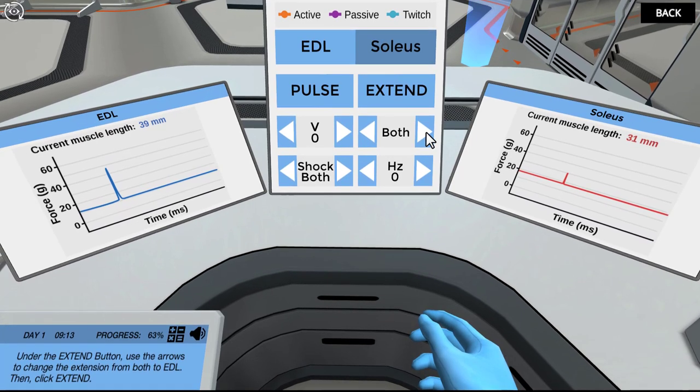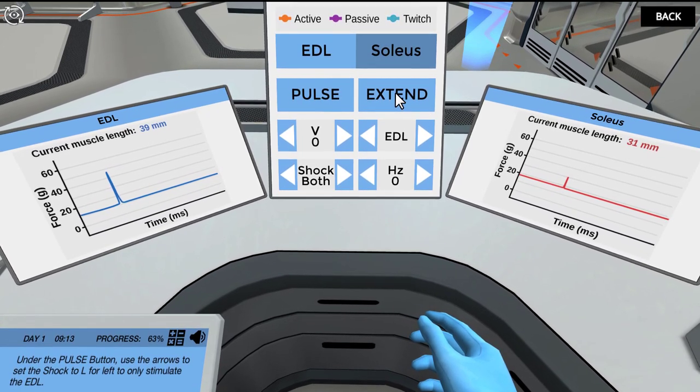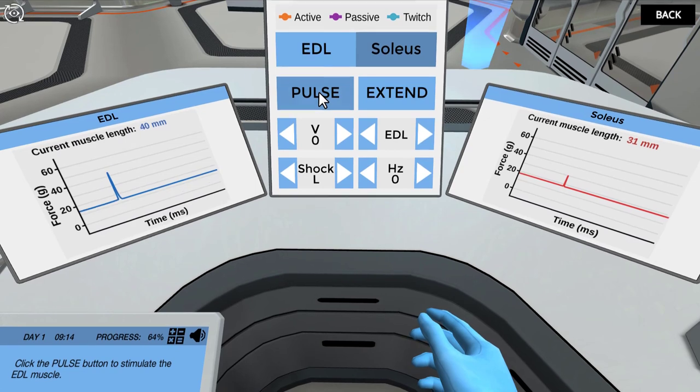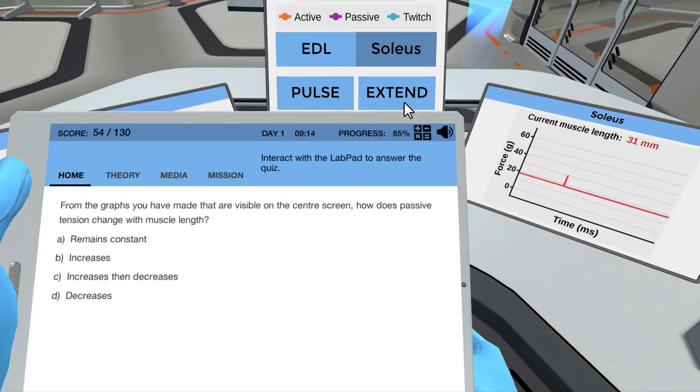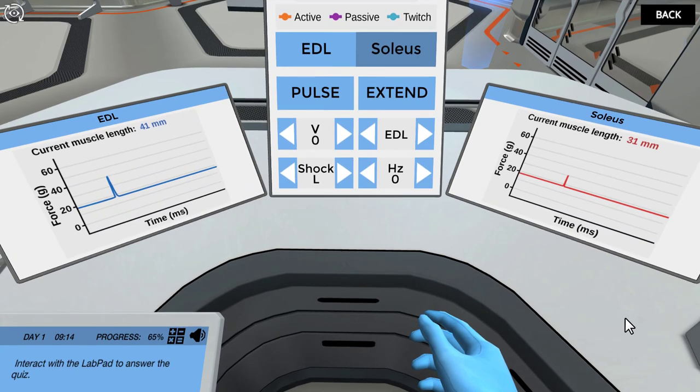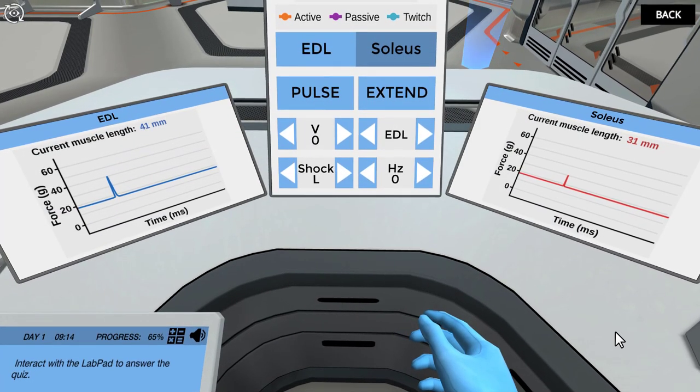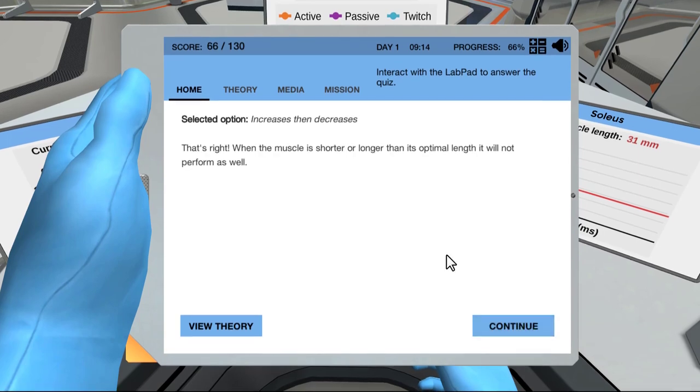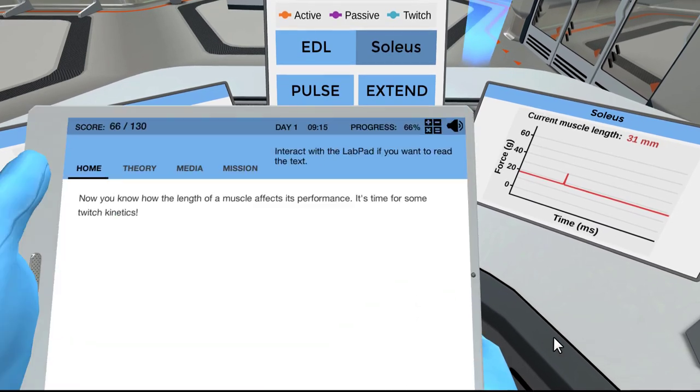Under the extend button, use the arrows to change the extension from both to EDL. Then, click extend. Under the pulse button, use the arrows to set the shock to L for left to only stimulate the EDL. Click the pulse button to stimulate the EDL muscle. Click on the extend button to extend the EDL by 1 mm. Click the pulse button to shock the EDL. From the graphs you have made that are visible on the center screen, how does passive tension change with muscle length? That's right, as you just saw the passive tension of the muscle increases when the muscle is extended, just like a rubber band. How does active twitch tension change with muscle length? That's right, when the muscle is shorter or longer than its optimal length it will not perform as well.